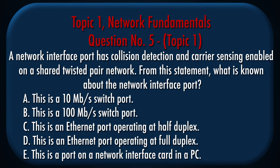Question Number 5, Topic 1. A network interface port has collision detection and carrier sensing enabled on a shared twisted pair network. From this statement, what is known about the network interface port? a. This is a 10 megabits per second switch port. b. This is a 100 megabits per second switch port. c. This is an Ethernet port operating at half duplex. d. This is an Ethernet port operating at full duplex. e. This is a port on a network interface card in a PC.